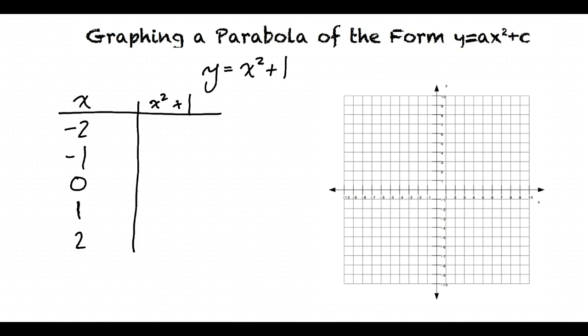So we already know that the vertex is at 0 comma 1. So when x equals 0, x squared plus 1 equals 1. Now let's start with negative 2. When x equals negative 2, we substitute it into our equation for y. Negative 2 squared plus 1 equals 5.